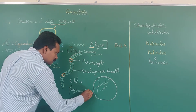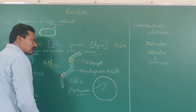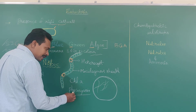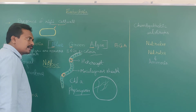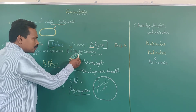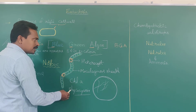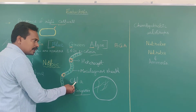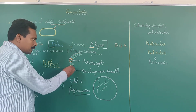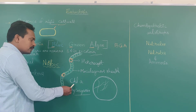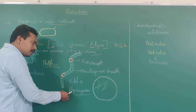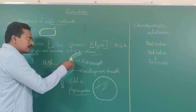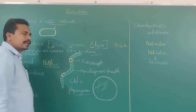Chlorophyll A appears green in color, whereas phycocyanin pigments appear blue in color. The blue color dots represent the phycocyanin pigment. Green color is caused by the chlorophyll A pigments. Due to the presence of equal amounts of chlorophyll A and phycocyanin photosynthetic pigments, these organisms appear blue-green in color.